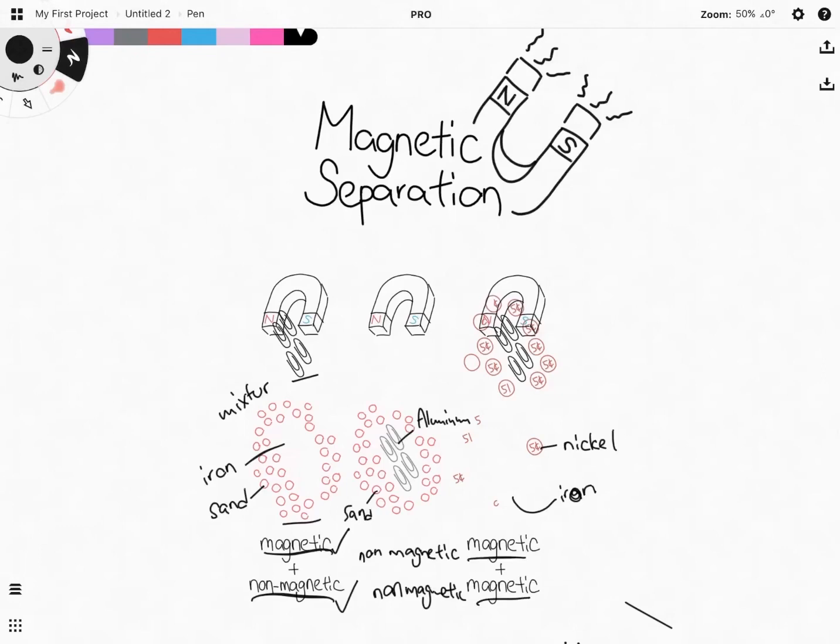And so, at the end of the day, you have to think when you want to use magnetic separation. I can only be able to separate if one of the substances is magnetic in nature and the rest is non-magnetic in nature. Because if all the substances are non-magnetic, the magnet won't be useful.